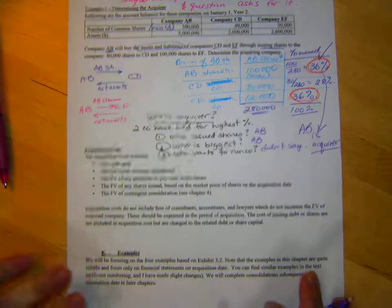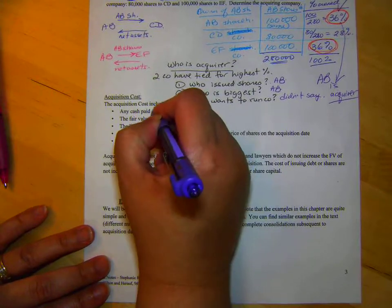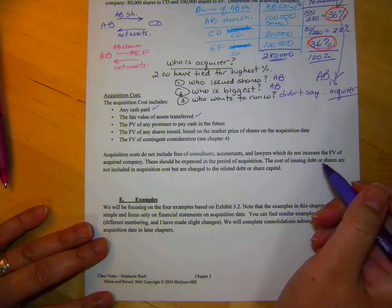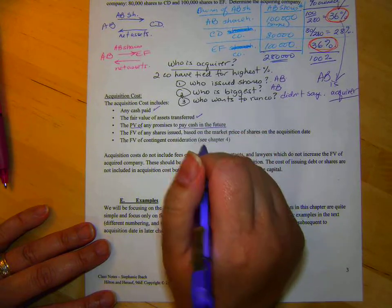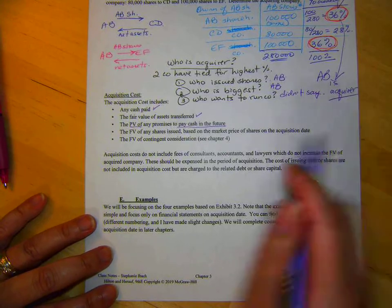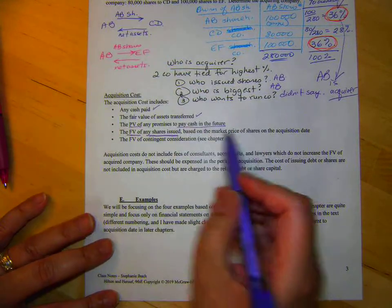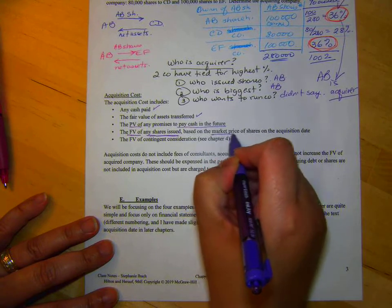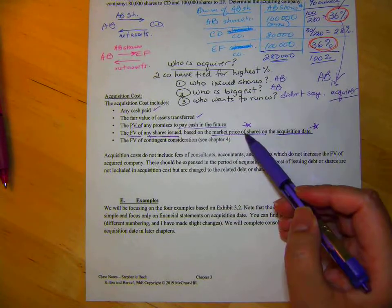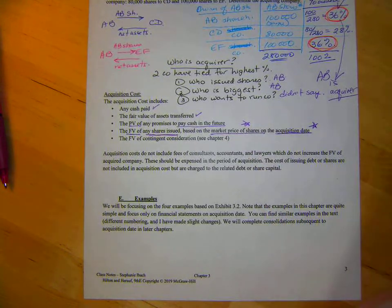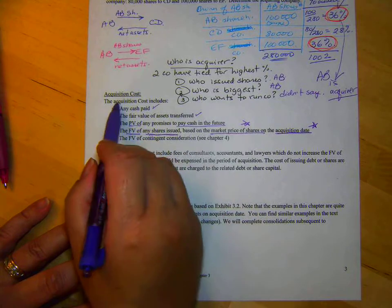Last thing before I shut this off. So, that's determining the acquirer. Now, we're looking at acquisition costs. Obviously, it's any cash paid. The fair value of assets transferred. So, if we gave you our shares. Present value of any promises to pay cash in the future. So, you know, at the end of the year, we'll give you another $2 million, something like that. And, you take the present value. The fair value of any shares issued. So, up here, where they issued shares. We base the cost or the price on the market price of the shares on the acquisition date. So, that's important. Sometimes, questions say, the average price was $12.35 during the year. They say, on January 1st, which was the acquisition date, they were $12.85. Always use the acquisition date.